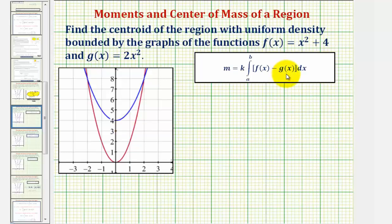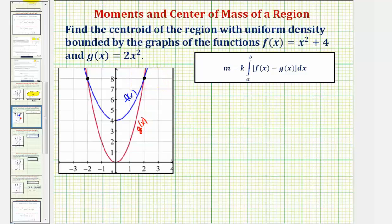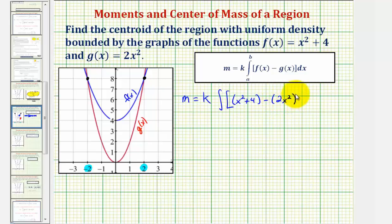Before we begin, notice that because we have symmetry across the y-axis, the moment about the y-axis will be zero, and therefore the x-coordinate of the centroid will also be zero. We'll verify this using our formulas. The blue function is f(x) and the red is g(x). The points of intersection have x-coordinates of negative two and two. Therefore the total mass equals k times the integral of f(x) minus g(x), which is (x² + 4) minus 2x², from negative two to two.